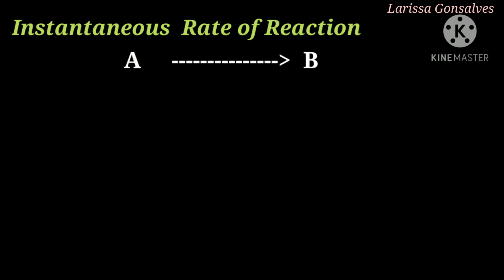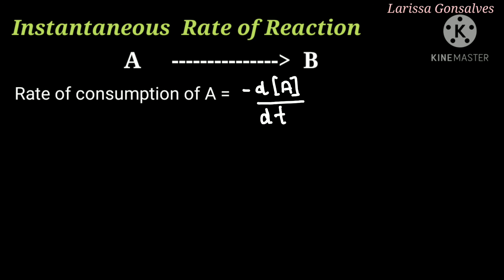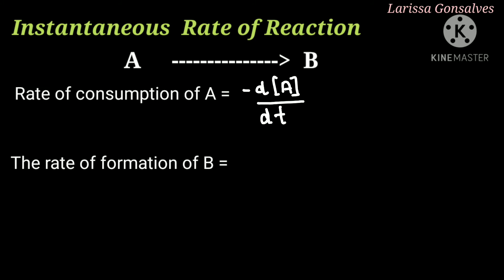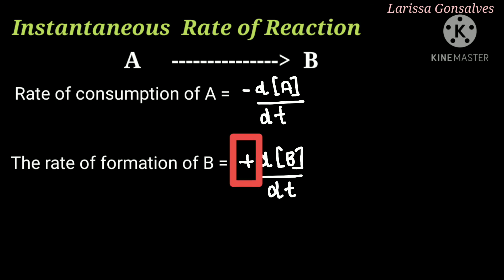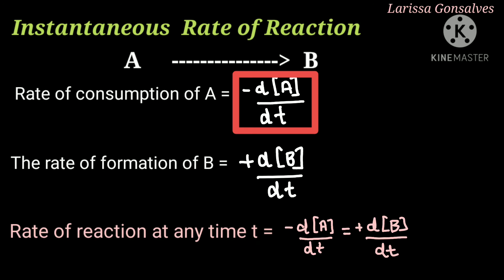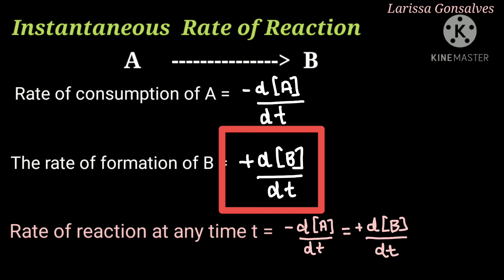Let us consider a general reaction where reactant A gives the formation of product B. Since A is the reactant, it will be consumed. Hence, the rate of consumption of A at any time is equal to −d[A]/dT. The minus sign indicates it is the reactant getting consumed. The rate of formation of B at any time T is equal to +d[B]/dT, since B is a product which is formed. So the rate of reaction at time T is: −d[A]/dT = +d[B]/dT.